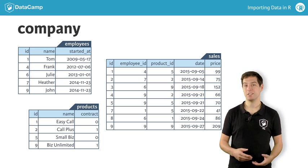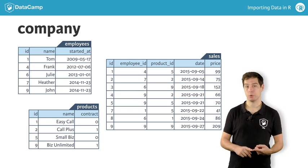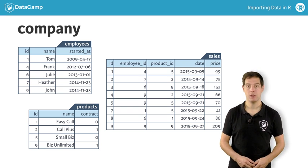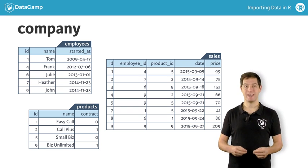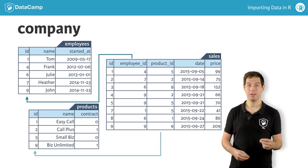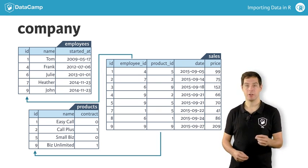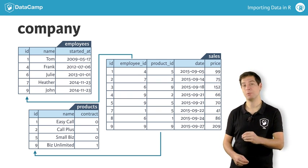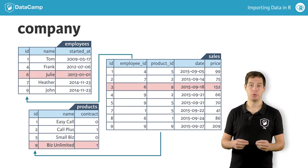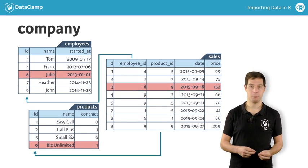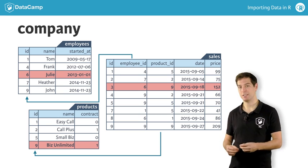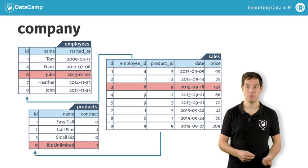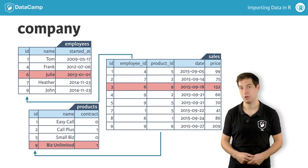Finally, there's a Sales table. It lists what products were sold by who, when, and for what price. Notice that the IDs in Employee ID and Product ID correspond to the IDs found in the Employees and Products tables respectively. The third sale, for example, was done by the employee with ID 6, so Julie. She sold the product with ID 9, so the BizUnlimited contract.